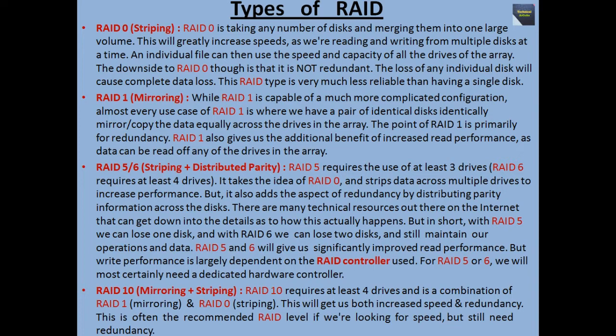For RAID 5 or RAID 6 we will most certainly need a dedicated hardware controller. The last type is RAID 10, mirroring plus striping. RAID 10 requires at least 4 drives and is a combination of RAID 1 (mirroring) and RAID 0 (striping). This will give us both increased speed and redundancy. This is often the recommended RAID level if we are looking for speed but still need redundancy.